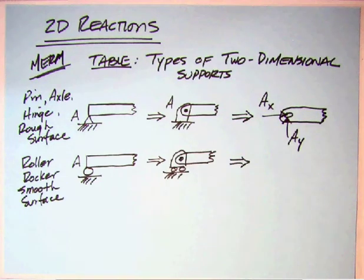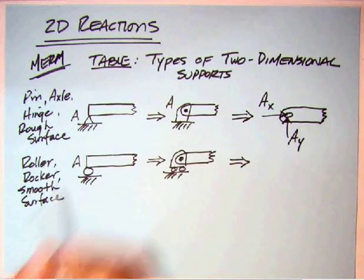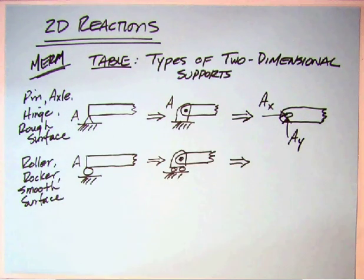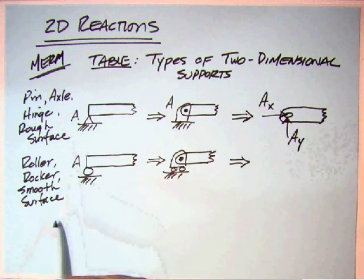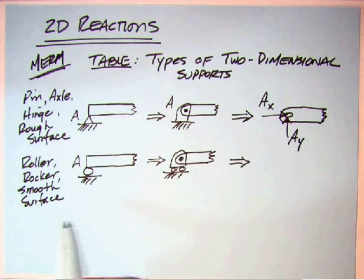The next one I think of importance is actually the one that's at the top, or the first box in that particular table, and that's referred to typically as a roller. It can also be a rocker, it can also be a smooth surface. Essentially, this looks like it's just sitting on a little ball. Well, again, that's just symbology like the knife edge for the pin and the axle,